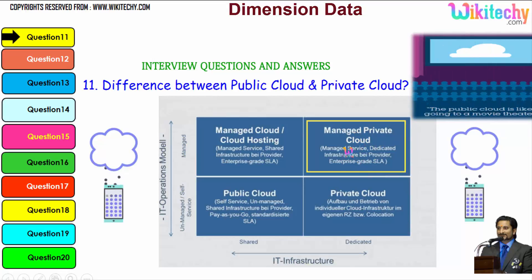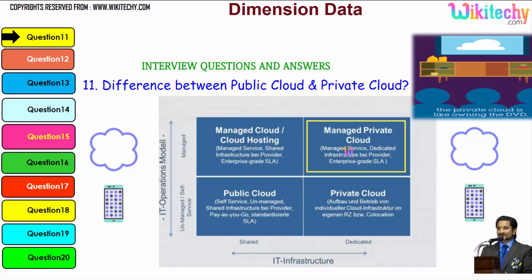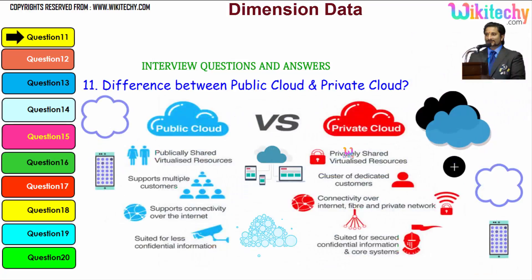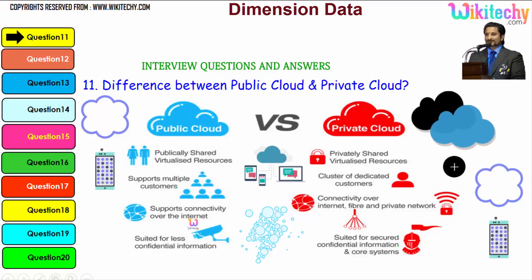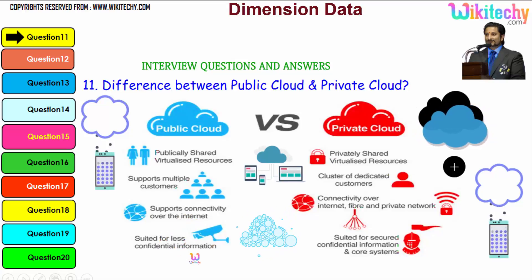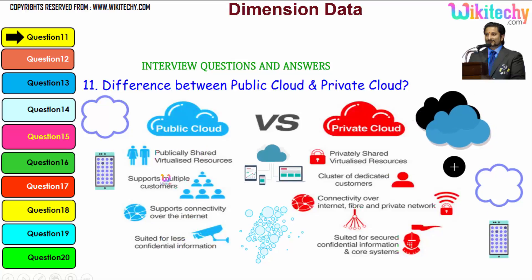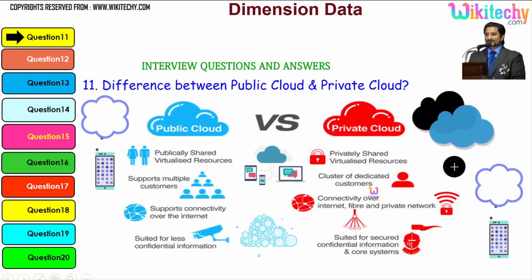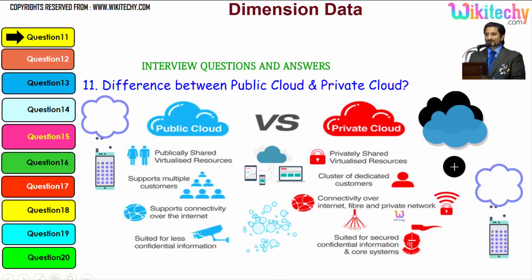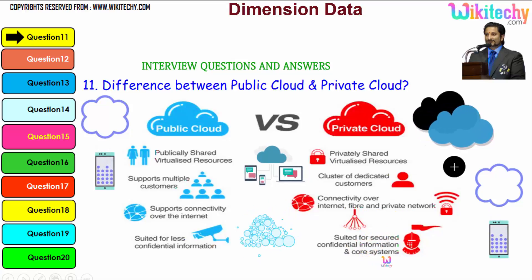This is how you can see the differences between the public cloud and the private cloud. The public cloud uses publicly shared virtual resources and supports multiple customers, supports connectivity to the internet, and is suited for less confidential information. For private cloud, you have privately shared virtualized resources, a cluster of dedicated customers, connectivity via internet, fibre, and private network, and it is suited for secure confidential information and core systems.